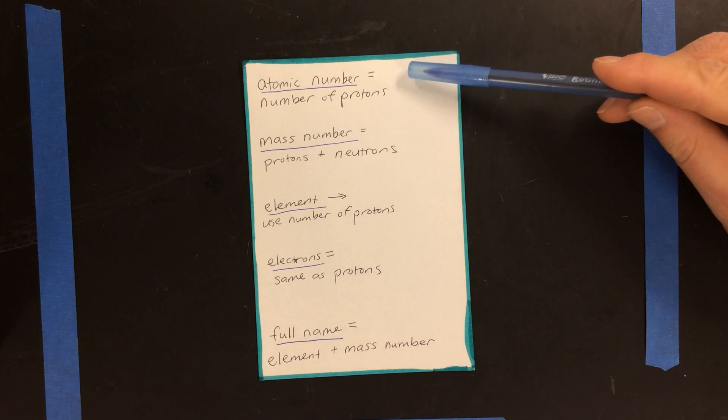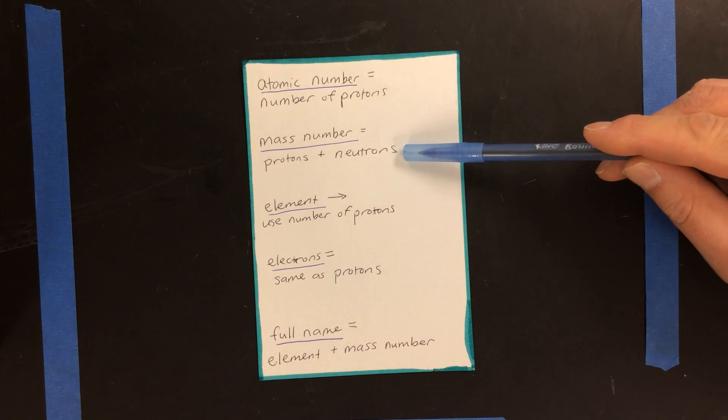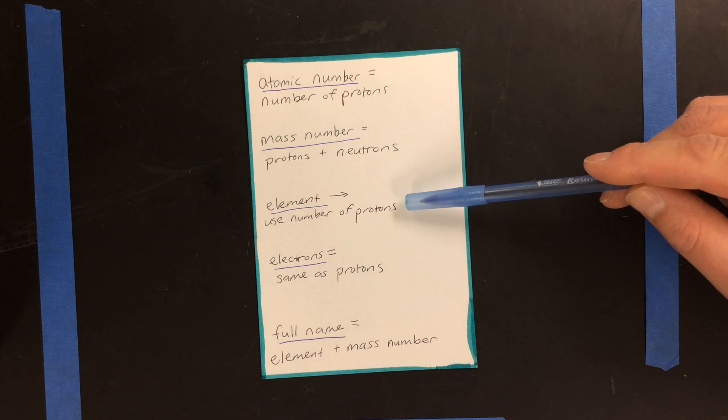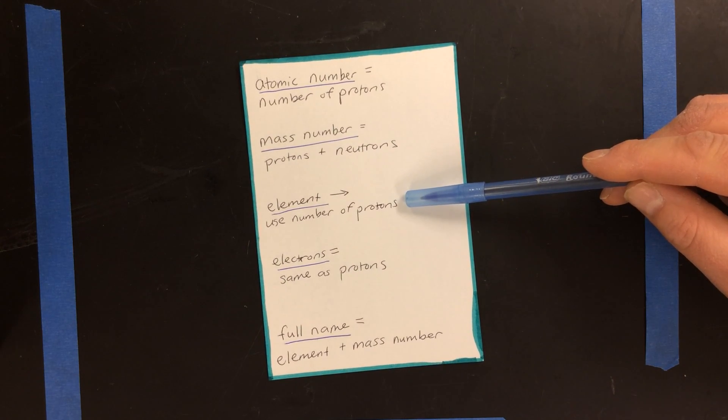We've learned that the atomic number is the number of protons. We've learned that the mass number is the total number of protons and neutrons. We've learned that the element is determined by the number of protons.